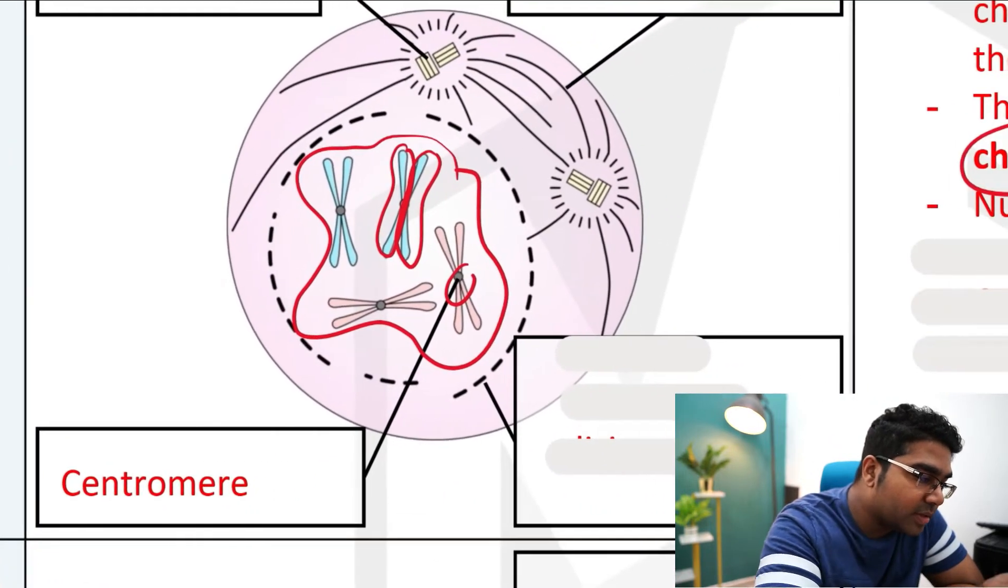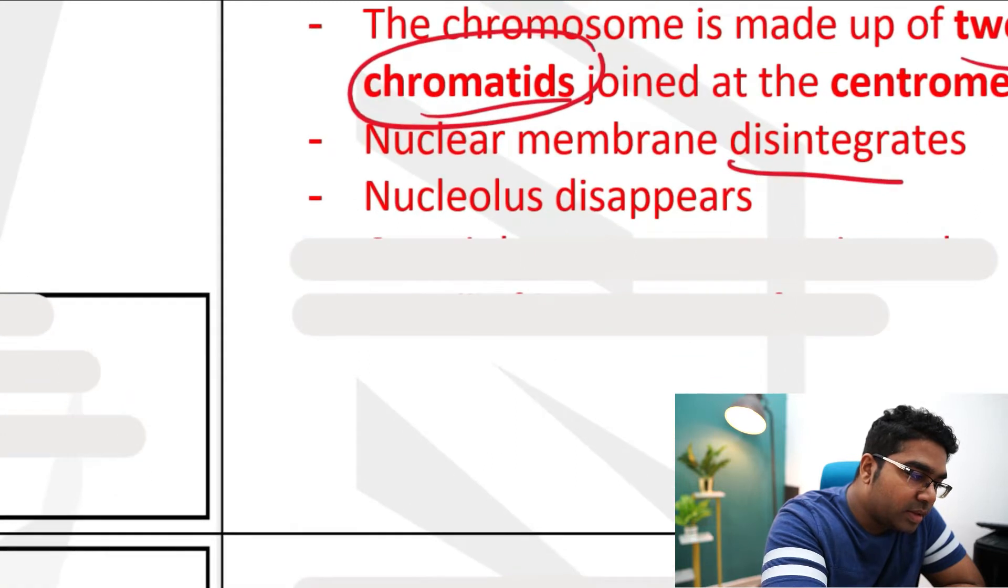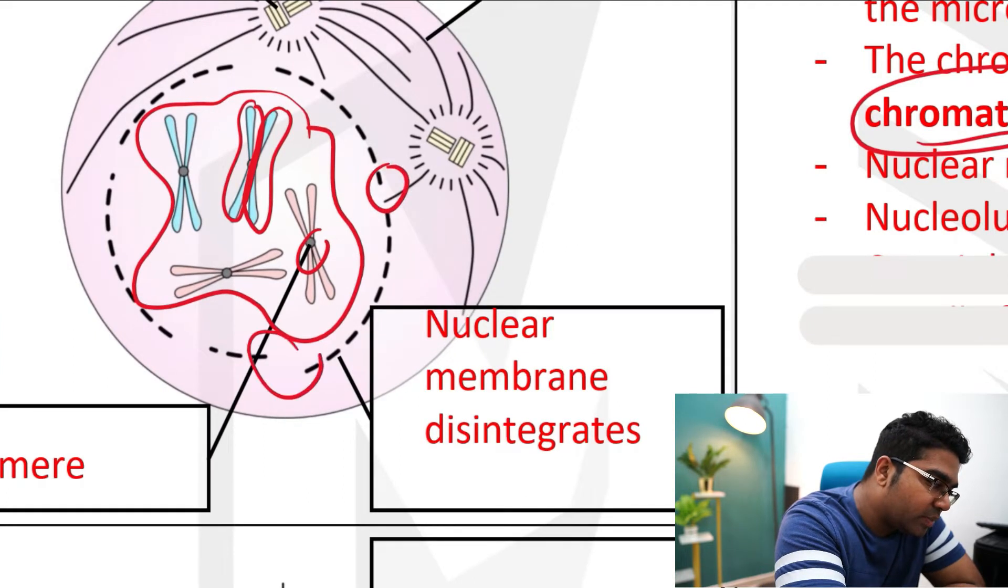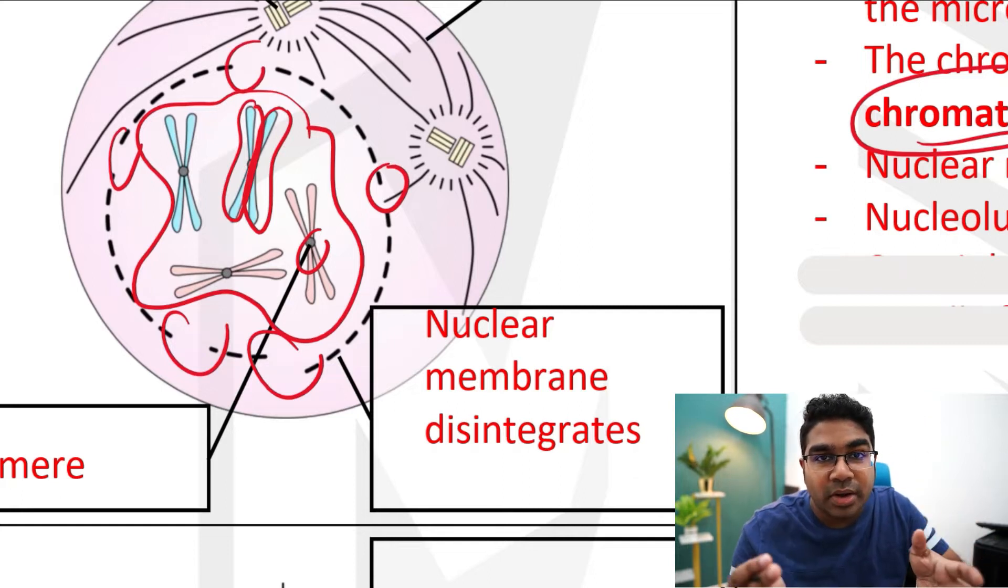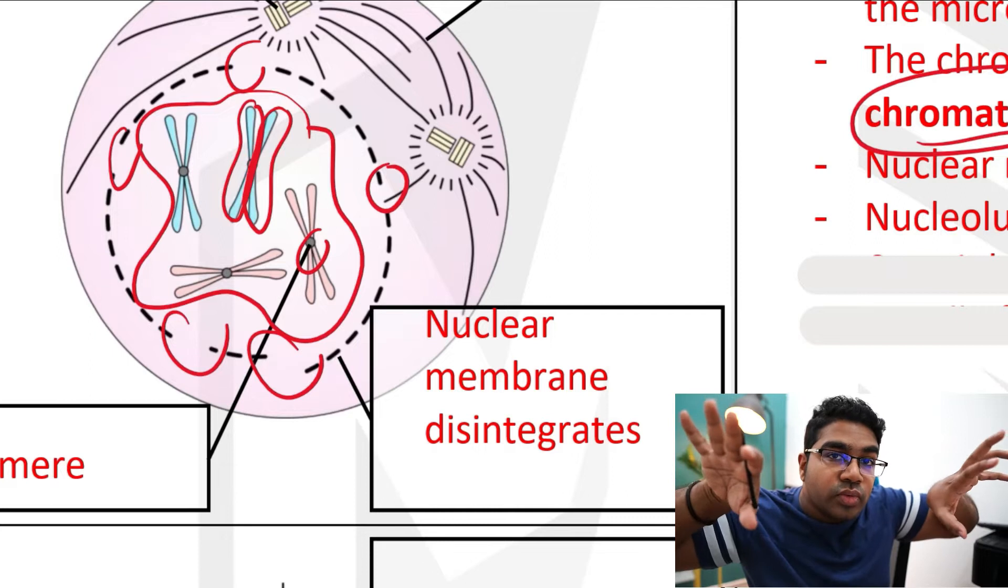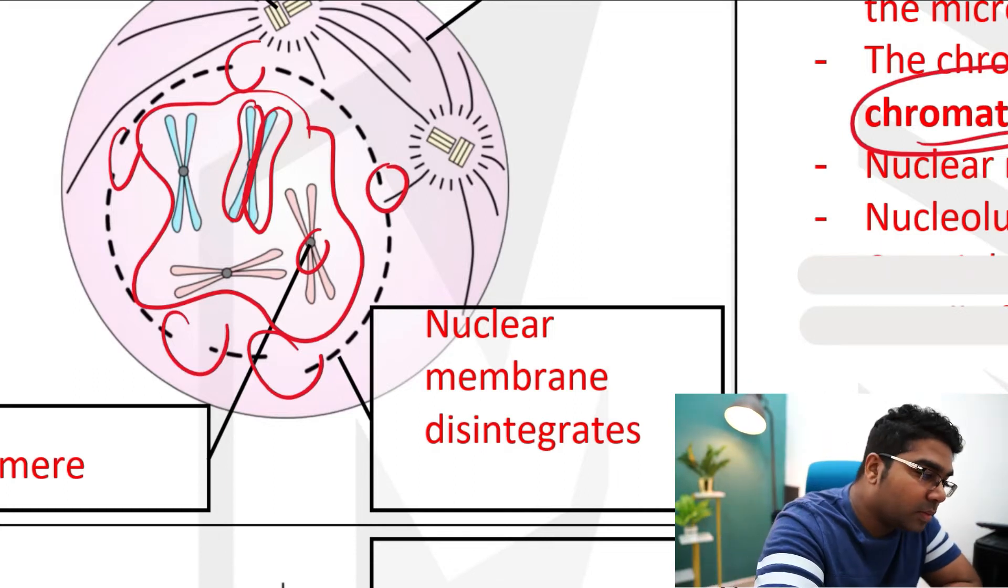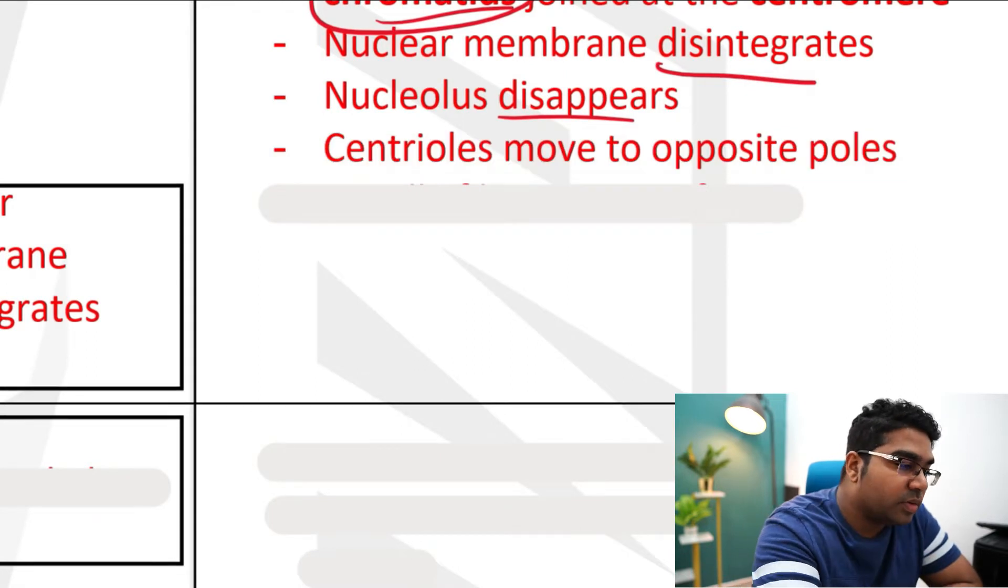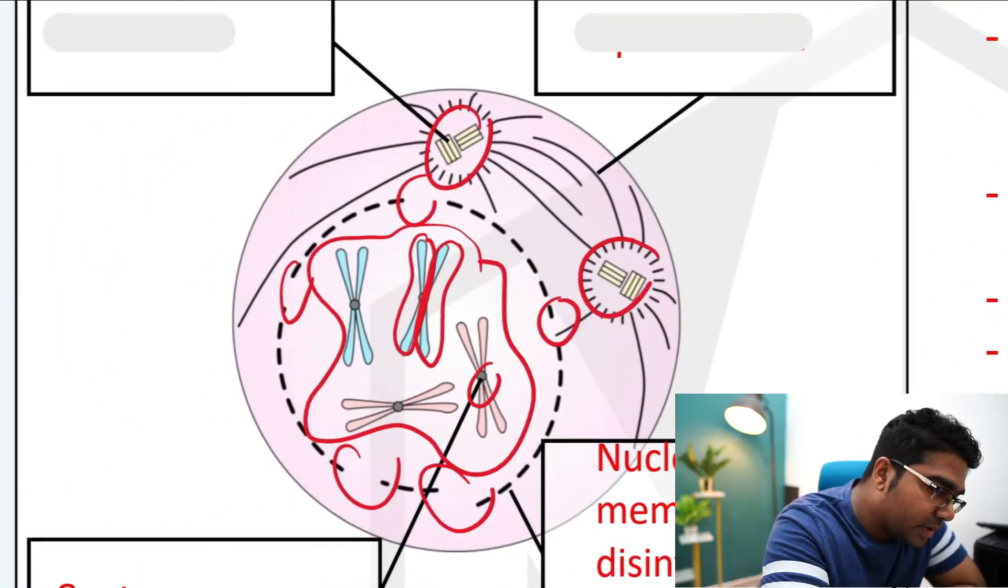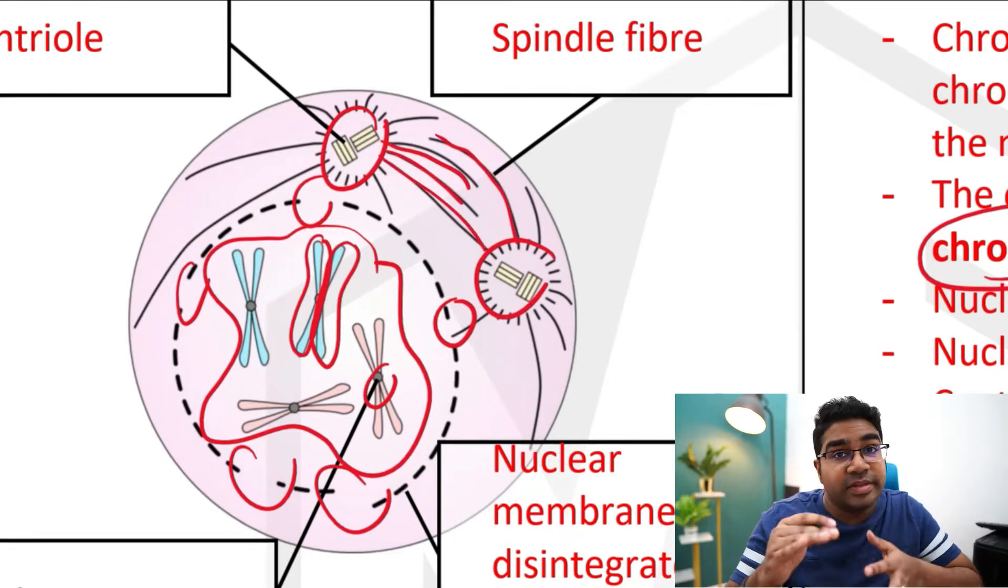So what happens during prophase other than the chromosomes becoming visible? The nuclear membrane disintegrates and the nucleolus disappears, as we can see in the diagram. This is the nuclear membrane that is breaking, disappearing. Because remember, these two copies of chromosomes must split and go to two different sites to form two different nuclei. This is not possible as long as the nuclear membrane is intact. And then we have the centrioles. The centrioles start to move to the opposite poles and the spindle fibers start to form. Centrioles are these two things, and they form spindle fibers, these fibers coming out of it. And that's it for prophase.